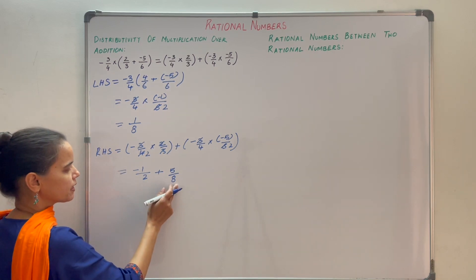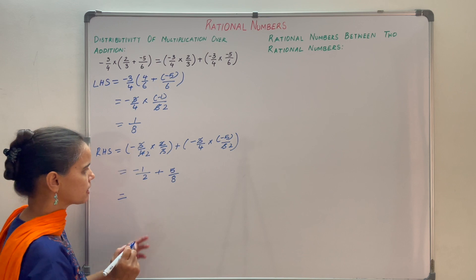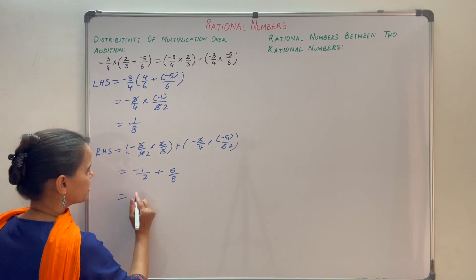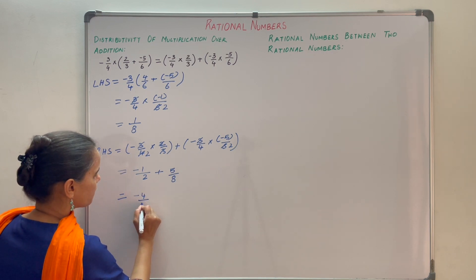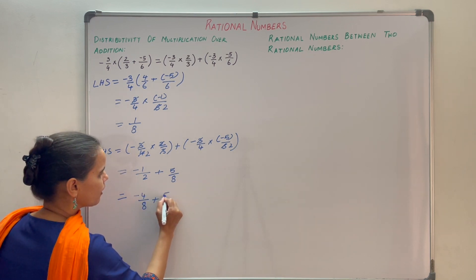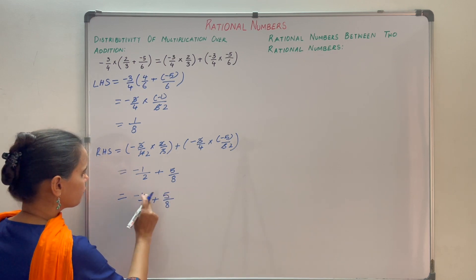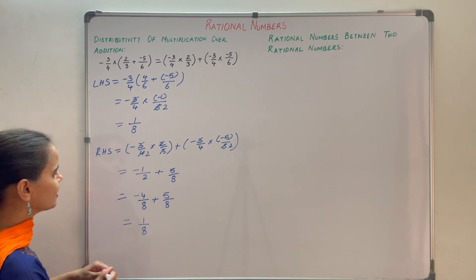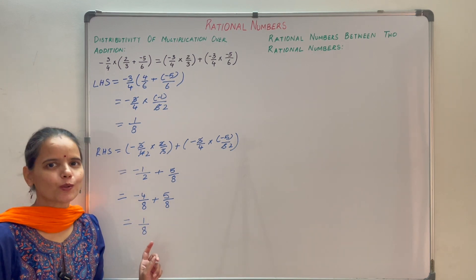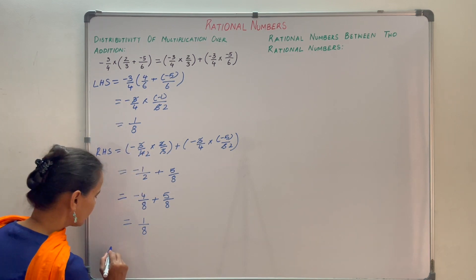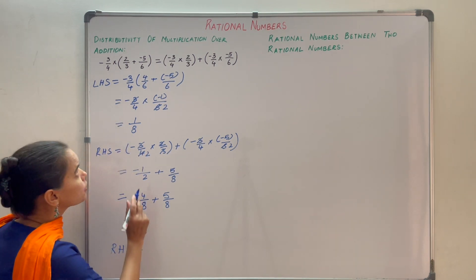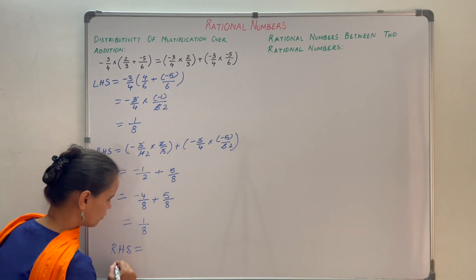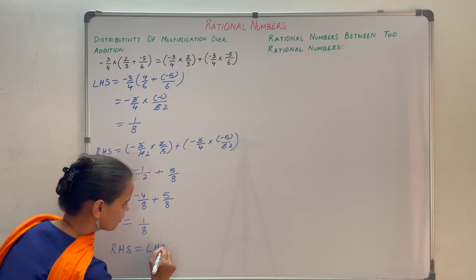The denominators are different, so take the LCM of 2 and 8, which is 8. Multiply numerator and denominator of the first term by 4 to get minus 4 by 8, and the second term is 5 by 8. So 5 minus 4 is 1, giving 1 by 8 on the right-hand side as well. Left-hand side equals right-hand side, so the distributive property of multiplication over addition holds true.